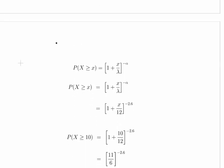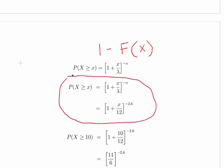So we go back to the probability of X being greater than some value x. That is 1 minus the cumulative distribution function. Probability of capital X greater than small x, where X is the claim values and small x is a certain number. The formula works out to be 1 plus x over 12 to the power of minus 2.6.